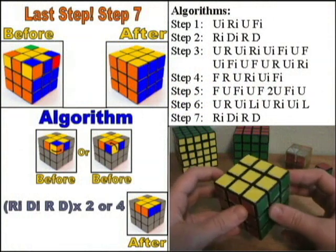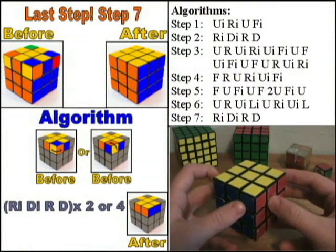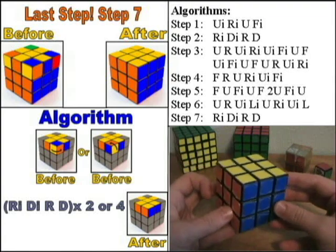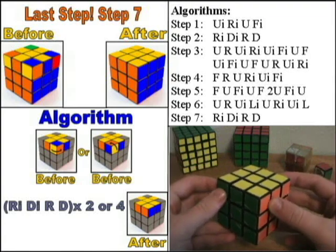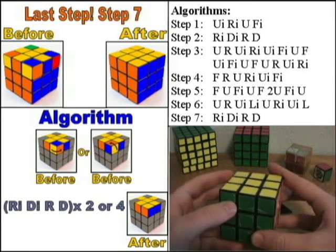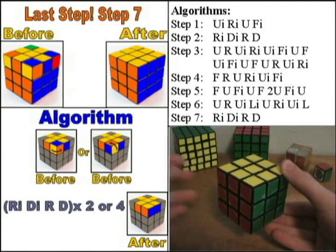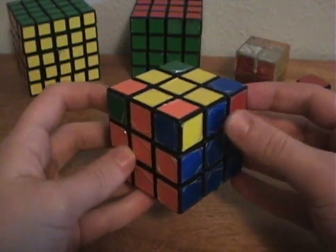Step seven, the last step. The goal for it is to orient the corners so that they are positioned correctly. In doing so, we'll solve the cube. The algorithm in this one is the same one as in step two: R I D I R D.